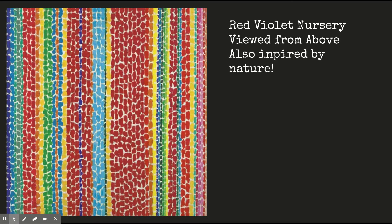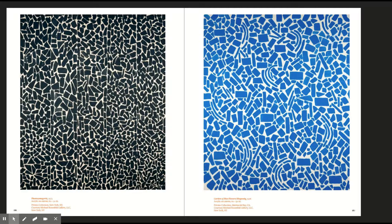This one is called Red Violet Nursery, Viewed from Above, also inspired by nature. You can notice that we're not seeing a direct interpretation of real flowers — we're seeing kind of like an idea communicated, and we see it in these splotches, and we see it in these lines and patterns and repeating shapes. The one on the left is called Phantasmagoria, and the one on the right is called Garden of Blue Flowers Rhapsody. Does that look like a garden of blue flowers to you? Maybe not, but does it kind of evoke the idea? Does it make you think of blue flowers?